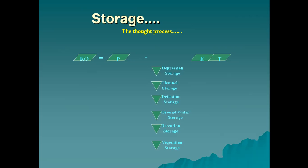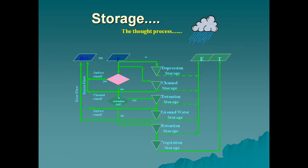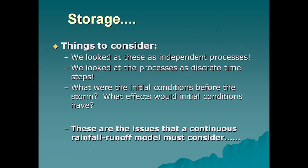RO is equal to ET plus depression storage, channel storage, retention storage, groundwater storage, and vegetation storage. That is the rainfall cycle. Precipitation leads to initial surface runoff, channel runoff, storm flow, and evapotranspiration. Things to consider: we look at these as independent processes and as discrete time steps. What are the initial conditions before a storm? What effects would initial conditions have? These are the issues that a continuous rainfall runoff model must consider.